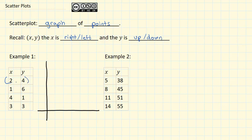The first point is 2 comma 4. That means we're going to go 2 to the right and up 4. And we'll make our point. The second point is 1 comma 6. So we'll go 1 to the right and 6 up.